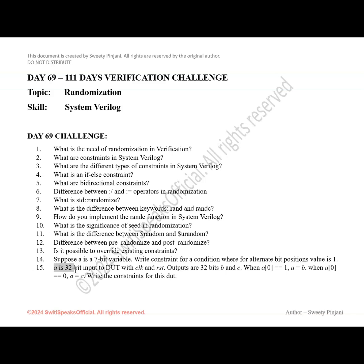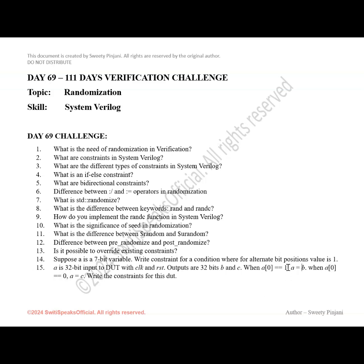The next coding example: A is a 32-bit input to a DUT (design under test) with clock CLK and reset RST. The outputs are 32-bit B and 32-bit C. When the 0th bit of input A is 1, then B equals A. When the 0th bit of input A is 0, then C takes the value of A. Write the constraints for this DUT as per these conditions.